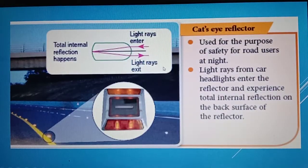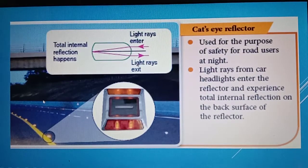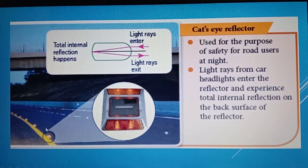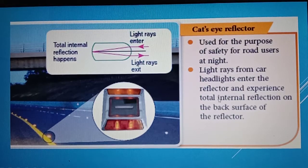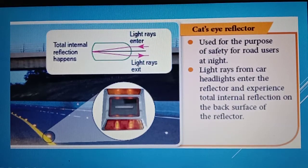This is the cat's eye reflector. You can see these on roads, especially in areas with less street lighting where there are normally no street lamps. As a safety measure, cat's eye reflectors are placed on the road. During night time, due to reflection, the driver can see the road clearly. Cat's eye reflectors are used for the safety of road users at night. Light rays from car headlights enter the reflector and experience total internal reflection on the back surface, bouncing back to return to the driver so they can see the track of the road easily at night.